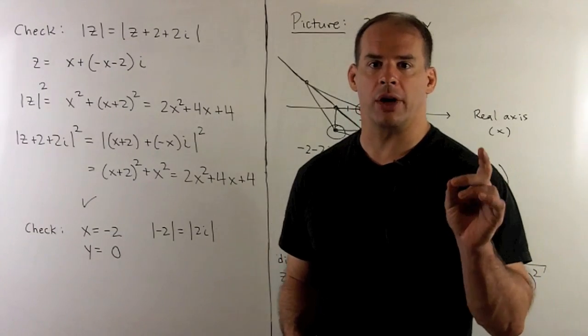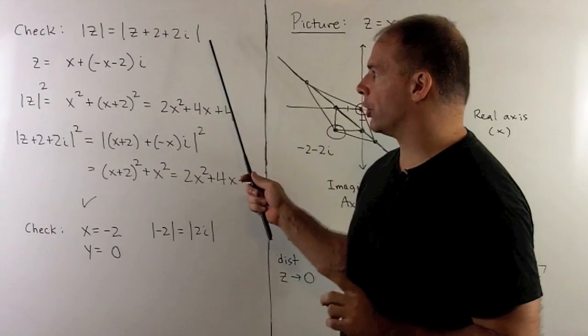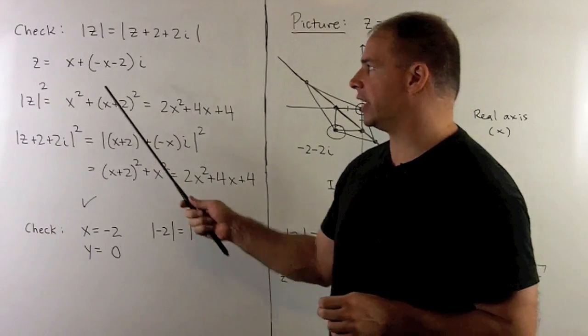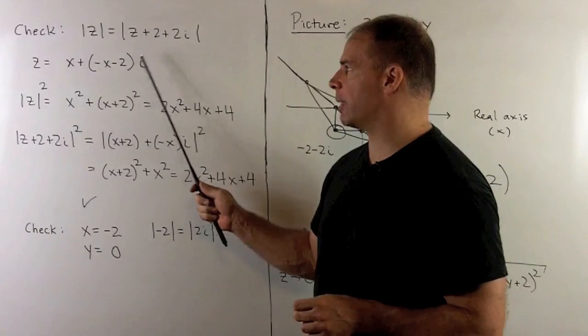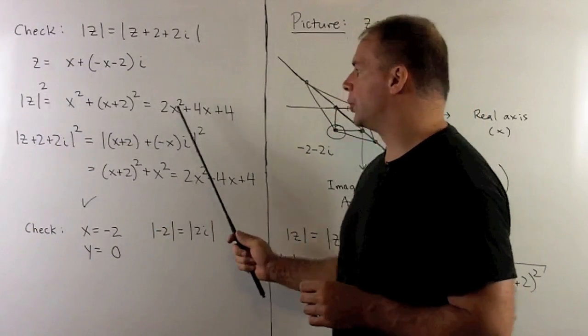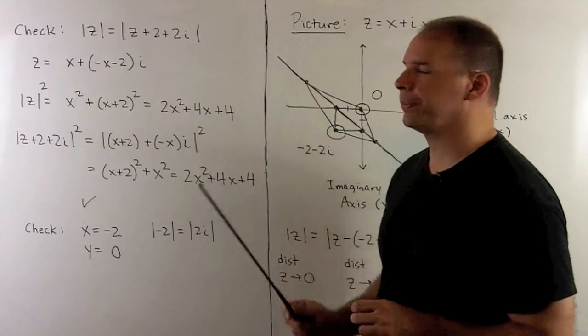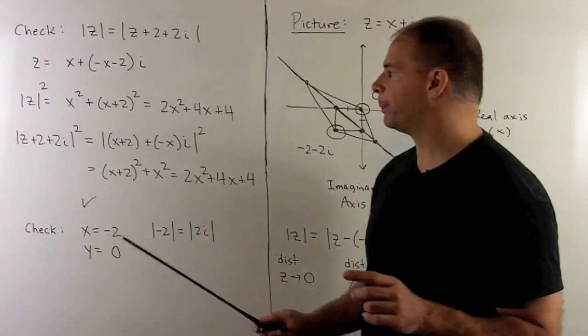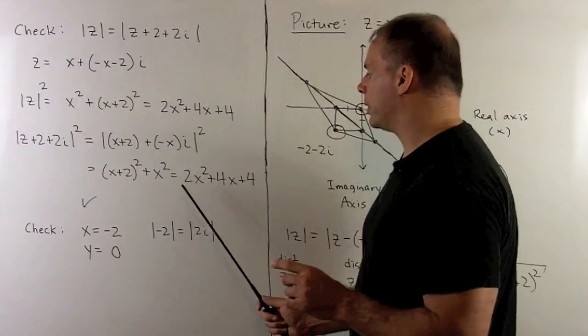Of course, we check our work. We're going to take our original equation and substitute our new expression for z. So x + (-x-2)i. For the modulus of z squared, we get 2x² + 4x + 4. For the modulus of z + 2 + 2i squared, we'll work that out. We get the same thing.